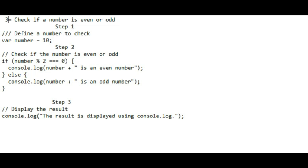The first step is to define a number to check. In this step, we define the number we want to check for even or odd. We set the variable number to 10, but you can replace it with any other integer you want to check.